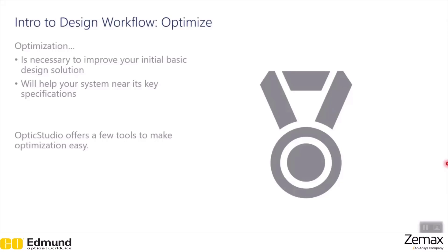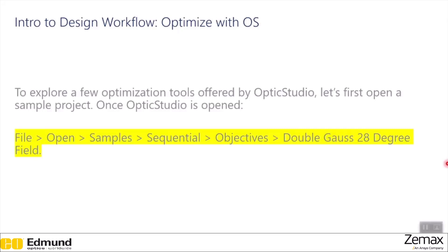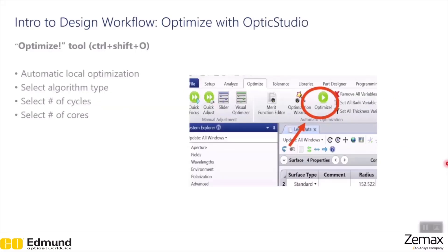Optimization will help your system meet its key specifications. Optic Studio offers a few tools to make optimization easy. The first tool is the Optimize tool, accessible via the keyboard shortcut Control-Shift-O. This is an automatic local optimization which allows you to select the algorithm type, number of cycles, and number of cores. We won't go into the technicalities of each function in this section, as those will be covered later in the course.